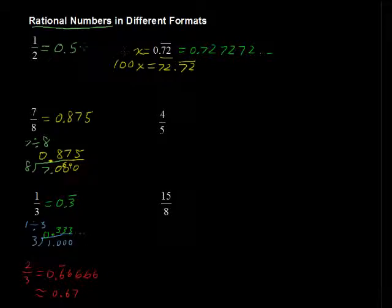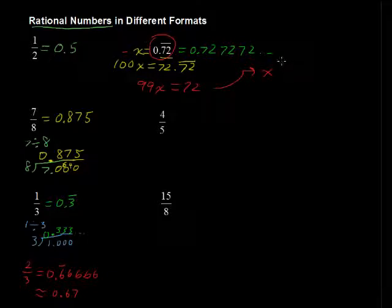Now if you subtract those, 100x minus x, what you get is 99x equals 72.72 repeating minus just 0.72, you're left with just the 72. So solving that equation, that is dividing by 99, you get x, which is what this equals, x equals 72 divided by 99.